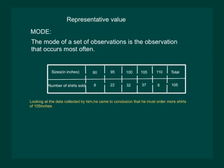Looking at the data collected by him, he came to the conclusion that he must order more shirts of 105 inches. We can say that mode for this information is 105 inches as 105 is the observation that occurs maximum number of times.